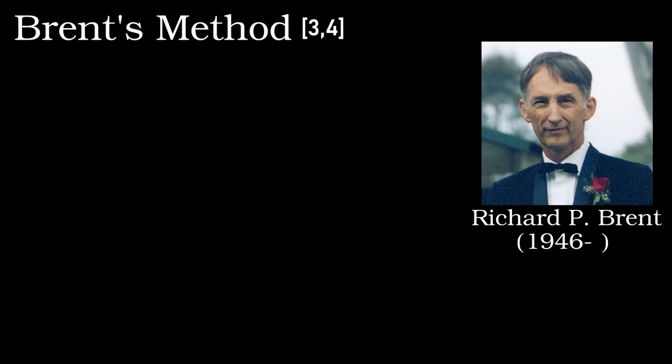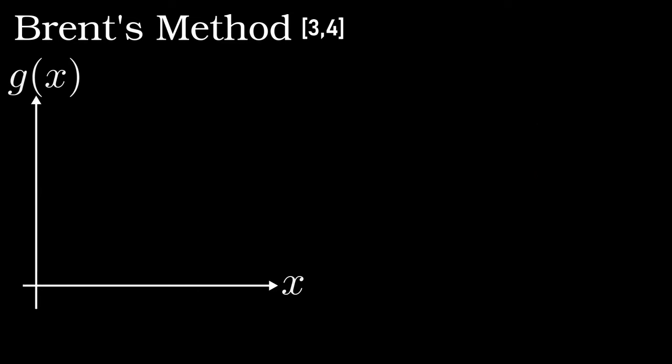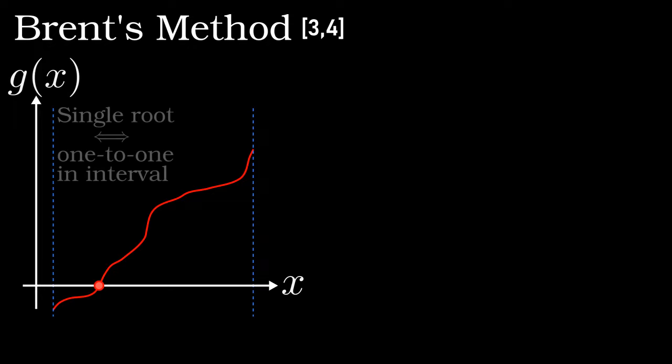My go-to algorithm for this kind of problem is Brent's method. It is generally the fastest way to find the root of a function, provided that you can specify an interval in which the function has exactly one root. I'll talk more about this in a bit, but in the context of our original function f of x, this would mean that it is a one to one function, meaning that there is precisely one value of x which solves for a particular value of y.